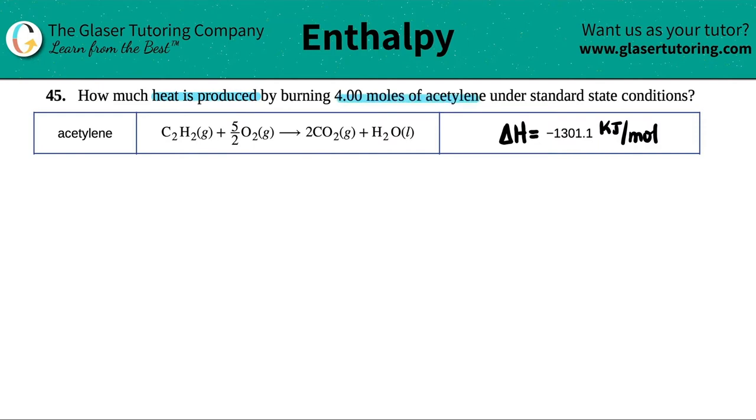Okay, so what I did was I went into the textbook and I found out the standard balanced equation for the combustion of acetylene, which is C2H2. And the most important part of this is to know that the delta H is negative 1,301.1 kilojoules per mole.